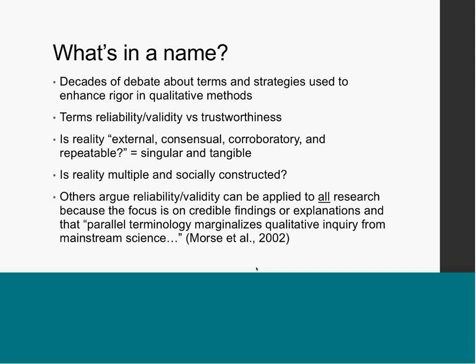There's a lot of debate about whether those terms can be applied to qualitative research, and it really comes down to what you consider to be reality or knowledge — whether it is internal, consensual, corroboratory, a singular and tangible thing that you can measure, which is often what quantitative and positivist paradigms pursue, or whether reality is multiple and socially constructed.